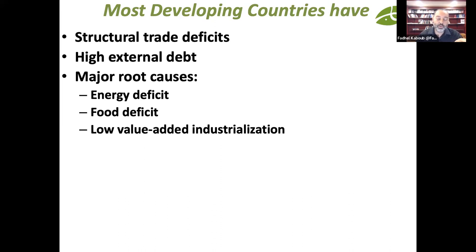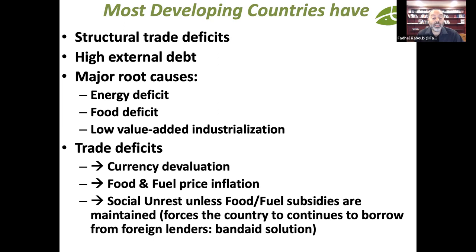As a result, everything you import the next day — whether food, fuel, or medicine — comes at a higher cost. This is the inflation pass-through effect that most developing countries struggle with. It forces the country into a choice: accept imported inflation and face social unrest and political instability, or impose a band-aid solution by borrowing dollars and euros to finance the trade deficit — until you hit the debt crisis.